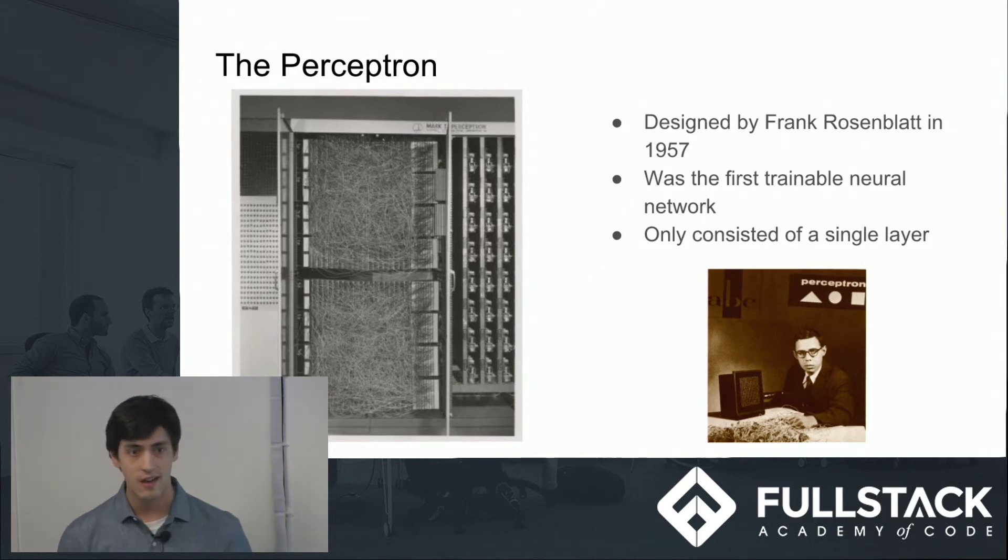Neural networks resurged again in the 1980s when we were able to build them multilayered. That's when the first image recognition stuff started to be developed.